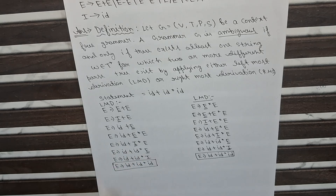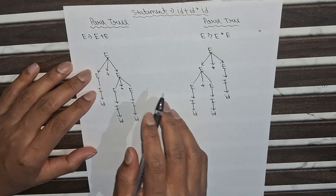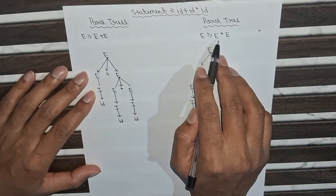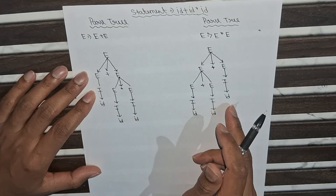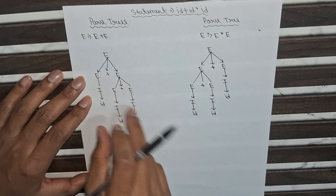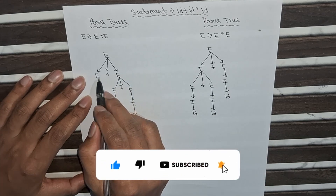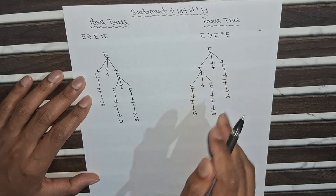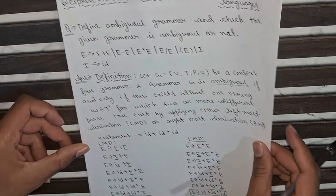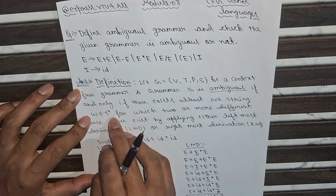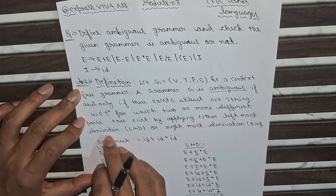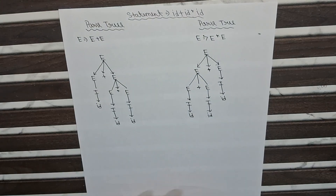Now we draw the parse trees for both derivations. We can clearly see that the parse trees for both productions are different — in one, the root branches via plus, and in the other via multiplication. From the definition, since there exists at least one string W in T* for which two or more different parse trees exist by applying LMD or RMD, this grammar is ambiguous. Thank you for watching, please subscribe to Express Video For All.